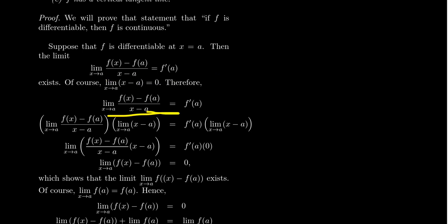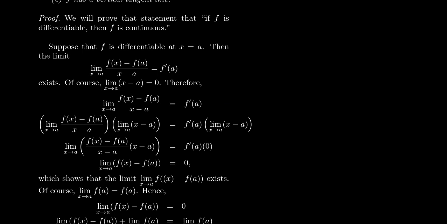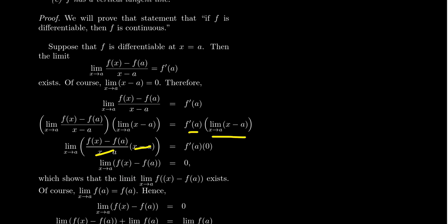Now, we're going to multiply both sides by the limit of (x − a) as x approaches a. On the left-hand side, we have the limit of the difference quotient multiplied by (x − a). These are two limits that each exist, so by limit properties we can bring them together into a single limit: the limit of [f(x) − f(a)] / (x − a) · (x − a). The (x − a) cancels, leaving just the limit as x approaches a of f(x) − f(a). On the right-hand side, f prime of a is just a number, and the limit of (x − a) as x approaches a equals zero, so any number times zero equals zero. Therefore, the limit as x approaches a of [f(x) − f(a)] equals zero.